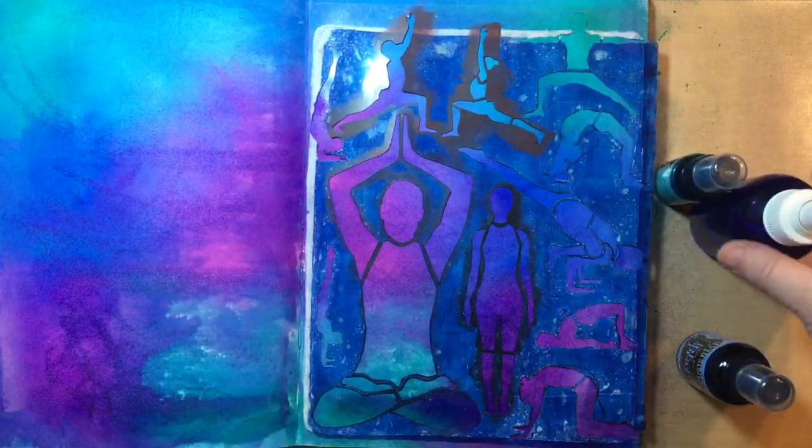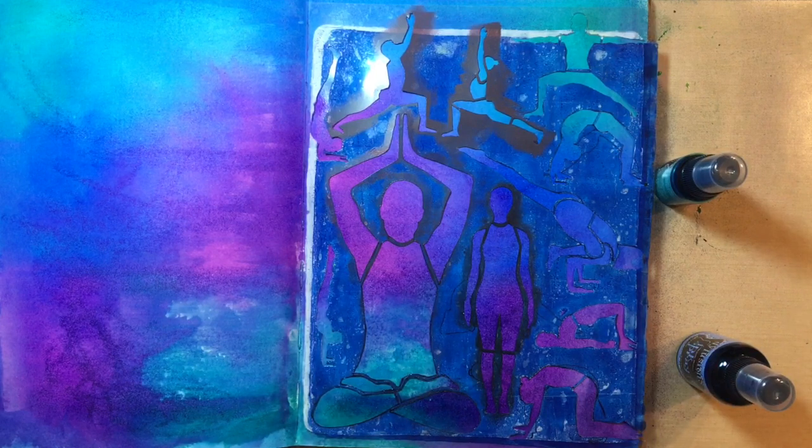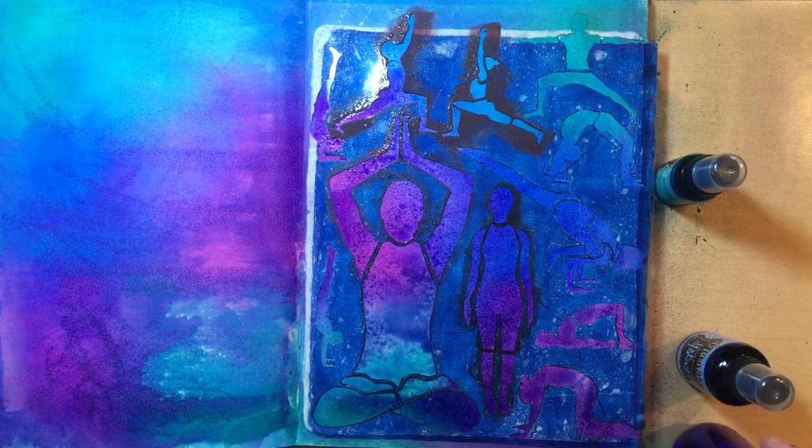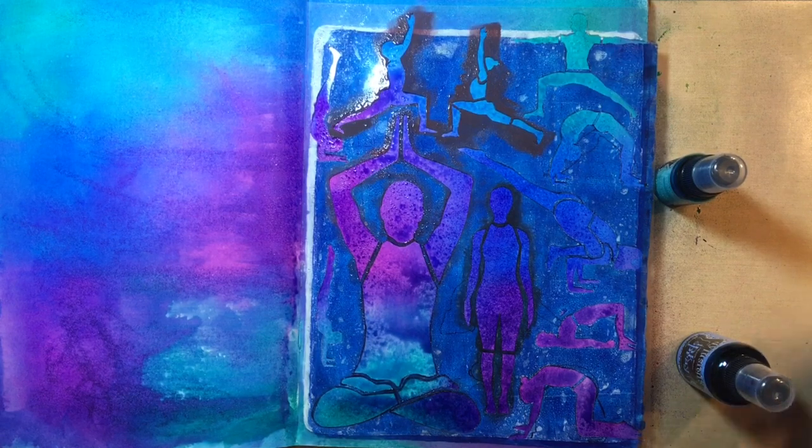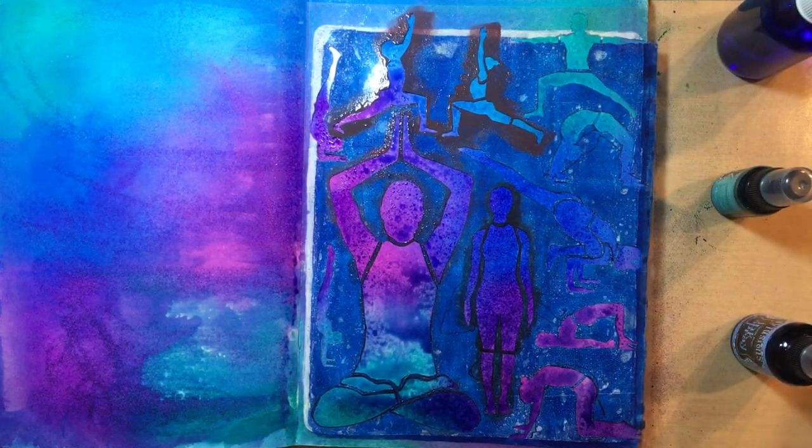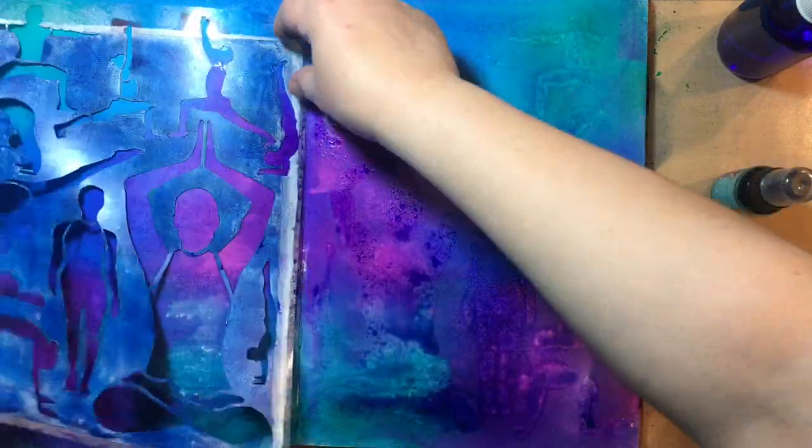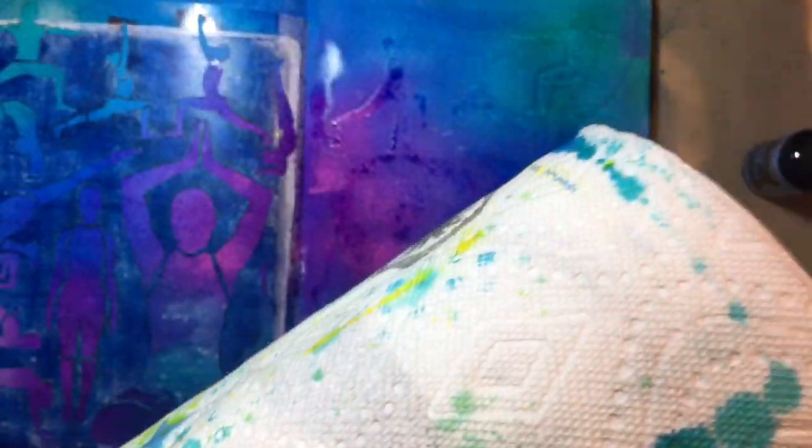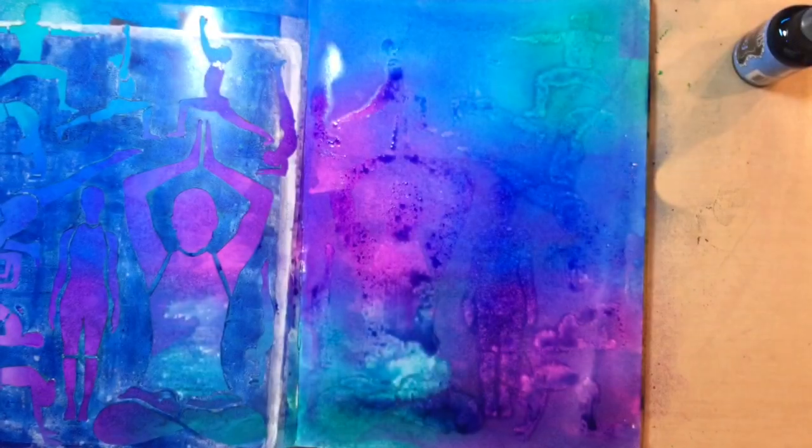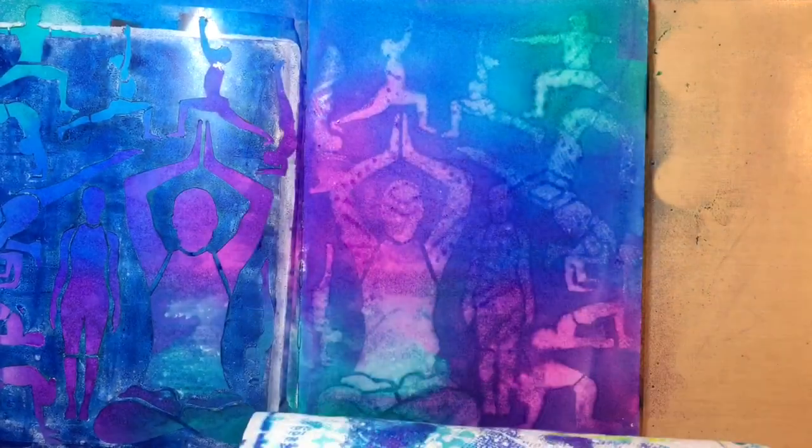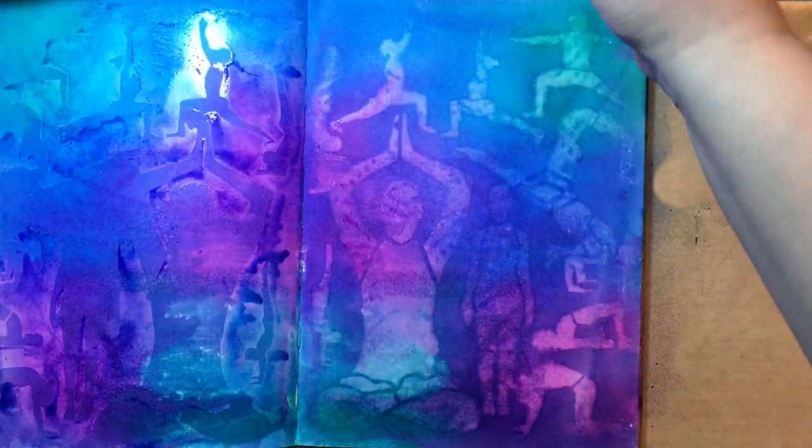Next, I lay down a hand cut stencil, this one's yoga themed, yoga pose themed. Spraying water through the holes of the stencil, peel it off just a little bit, flipping it over to the other page. Roll paper towels here is just the thing you need to pick up the newly rewetted areas.